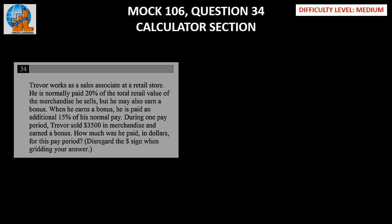Trevor works as a sales associate at a retail store. He is normally paid 20% of the total retail value of the merchandise he sells, but he may also earn a bonus. When Trevor earns a bonus, he's paid an additional 15% of his normal pay. During one pay period, Trevor sold $3,500 in merchandise and earned a bonus as well.